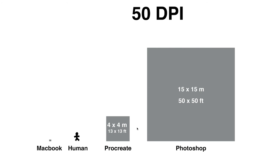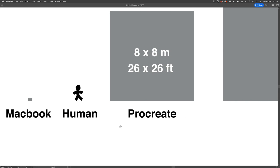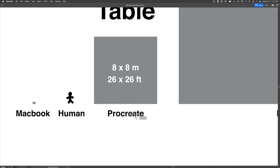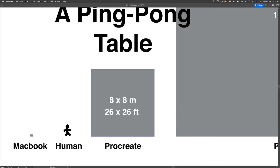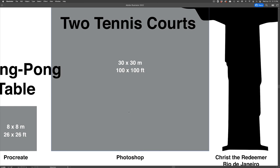Going back to the comparison diagram: Procreate's maximum at 50 DPI is 13 by 13 feet (4 by 4 meters), while Photoshop's maximum is 50 by 50 feet (15 by 15 meters). At 25 DPI, the largest possible file in Procreate is 8 by 8 meters (about 26 by 26 feet) — roughly the size of a ping pong table. In Photoshop at 25 DPI, we're looking at 100 by 100 feet, or 30 by 30 meters — the size of two tennis courts side by side.